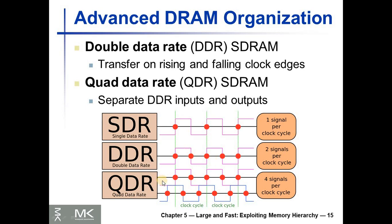There is also quad data rate, QDR SDRAM, where there are two separate buses — one for input data and one for output data. Each of them is double data rate, so we get four data words per cycle.